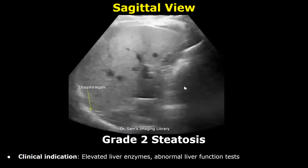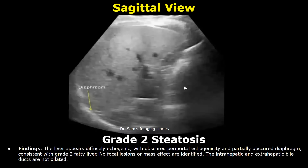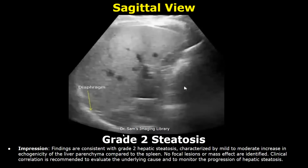Next we move on to grade two steatosis. The indication is elevated liver enzymes and abnormal liver function tests. In the findings for grade two steatosis, write that the liver appears diffusely echogenic with obscured periportal echogenicity and partially obscured diaphragm, consistent with grade two fatty liver. In the impression, mention grade two hepatic steatosis and finally mention the clinical correlation.